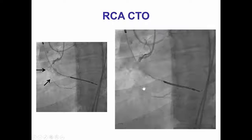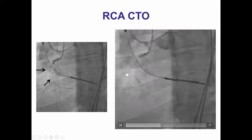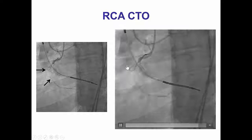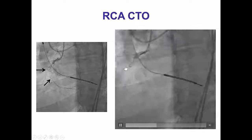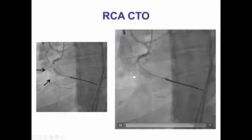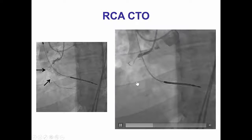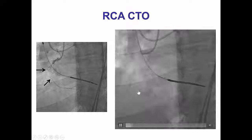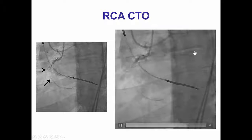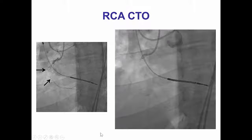The patient had a right coronary artery CTO. There was an ambiguous proximal cap with a large marginal originated at the proximal cap, the length was about 30 mm, and the distal vessel was of good size without significant disease. There were also some septal collaterals from the LAD to the posterior descending artery.